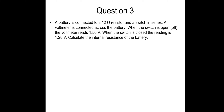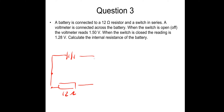Question 3: a battery is connected to a 12 ohm resistor and a switch in series, with a voltmeter across the battery. When the switch is open the voltmeter reads 1.5 volts; when closed the reading is 1.28 volts. Calculate the internal resistance of the battery. So we have a battery with a switch, connected to a 12 ohm resistor and a voltmeter across the battery.